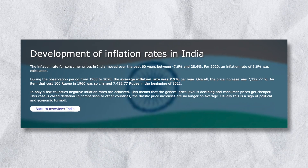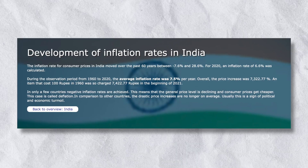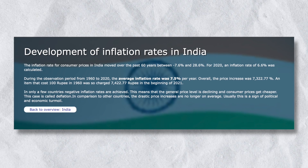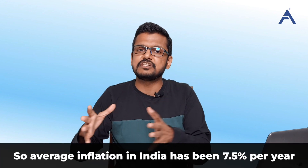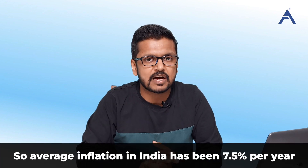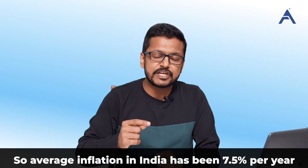As per Government of India data, if you look at the last 40 years of inflation data, the inflation in India is around 7 to 7.5% compounded annually. It was very low for a long time but also very high in the 80s, 90s and other phases. So average inflation in India has been between 7 to 7.5%.